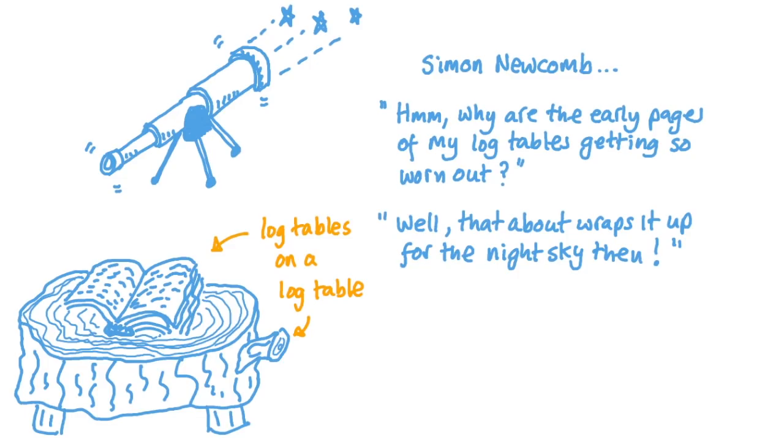Then, back in 1881, an American astronomer called Simon Newcomb was using log tables to do loads of calculations, and he noticed that the early pages containing logarithms of values beginning with 1 and 2 were getting much more worn out through use than the other pages. He did a bit of research and published a paper about the probabilities of the first digits taking certain values.